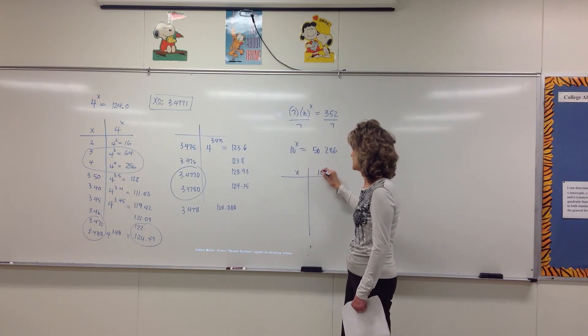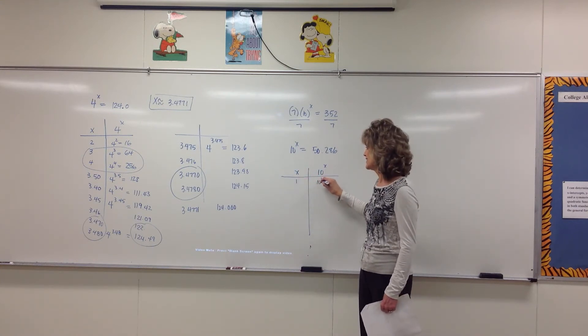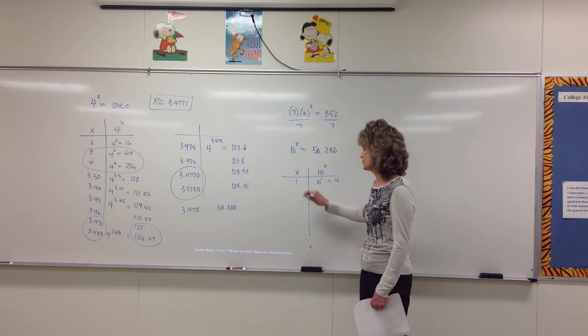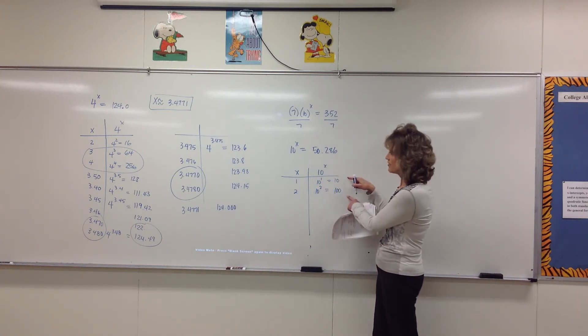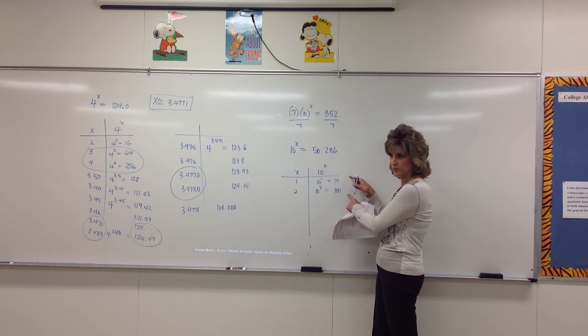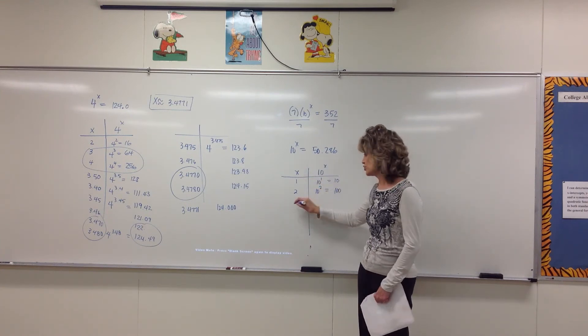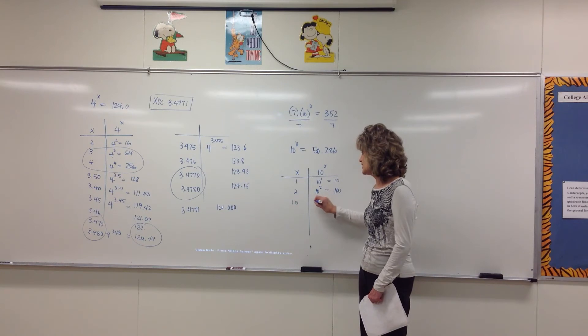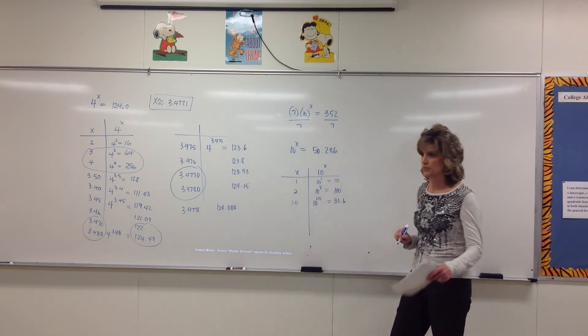So x and 10 to the x. If x is 1, 10 to the first is 10. Too small. If x is 2, 10 to the second is 100. Too big. We want to get 50.286. It's somewhere in between here. So what does that tell us about our exponent? Where should it fall? Between 1 and 2. So we'll jump right in the middle and try 1.5. Anybody have it? 31.6. Too small, right? So what does that tell me about the exponent? It needs to be a little bigger.